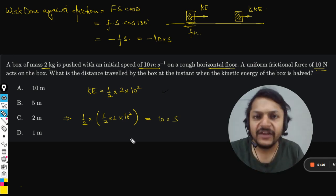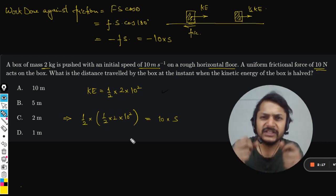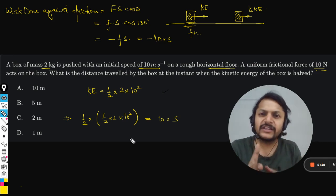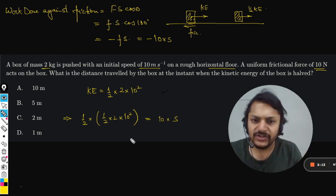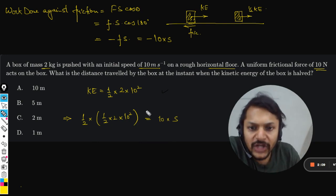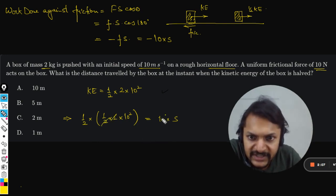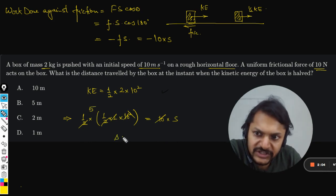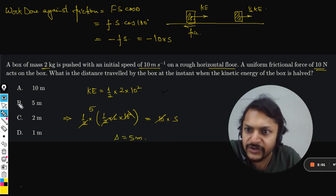I'm removing the negative sign because we are more concerned with the magnitude only. Now we solve this. This gets cancelled out, so it would be 5. The distance will be 5 meters.